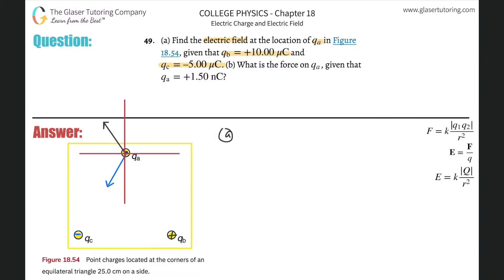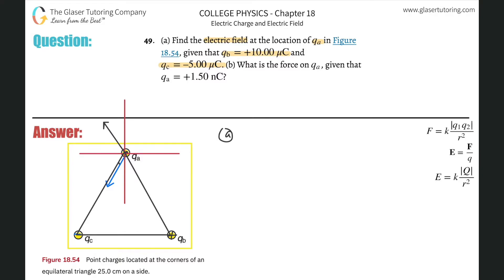Our job now is to find the resultant electric field, so I draw my coordinate axes. I also need to know the angles. The problem states it's an equilateral triangle with 25 centimeter sides. All interior angles of an equilateral triangle are 60°, since they're all equal and sum to 180°. The angle from the vertical axis to each vector is therefore 30° — both vectors make 30° with the y-axis.